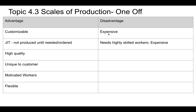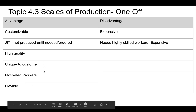Being high quality means they're expensive, which is a disadvantage. They're unique to the customer, and usually produced by motivated workers. This is a bit like cottage industry — before the Industrial Revolution, you'd order something and the maker would take it from raw materials all the way through completion. Like a cobbler who would measure your foot and produce the shoe from leather to finished product. They would take pride in their work and be motivated.